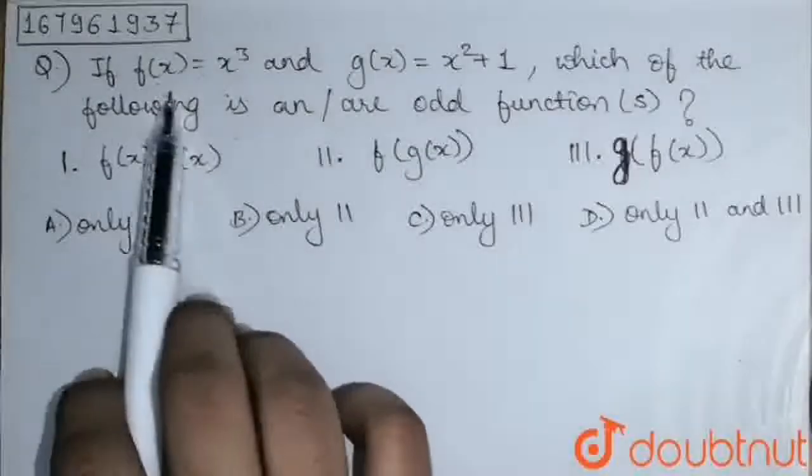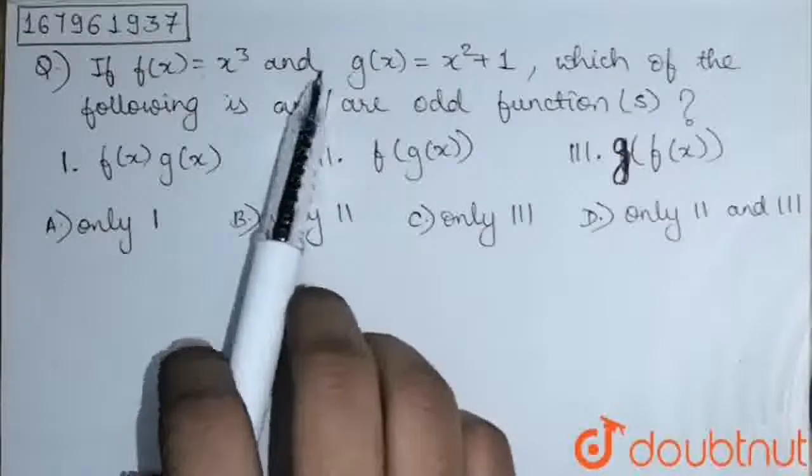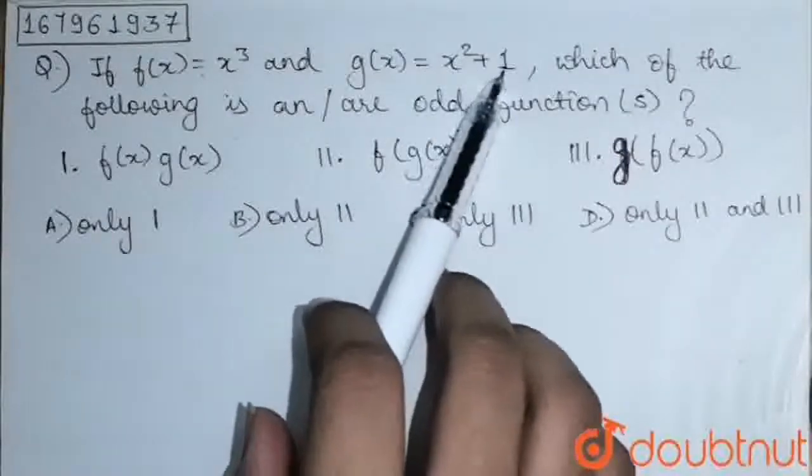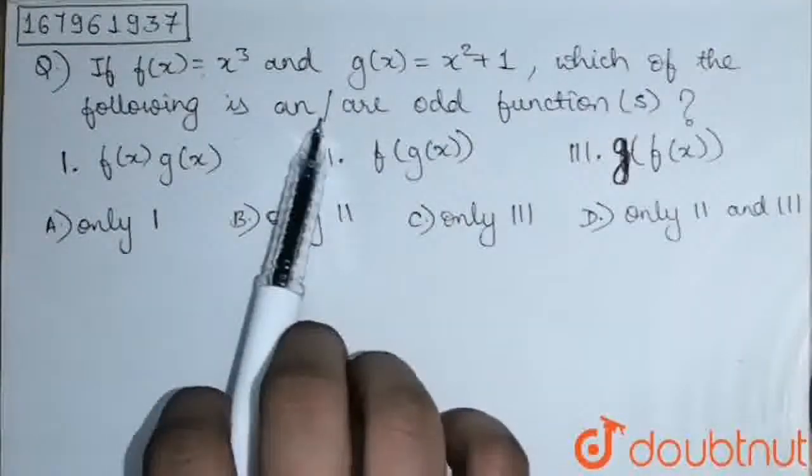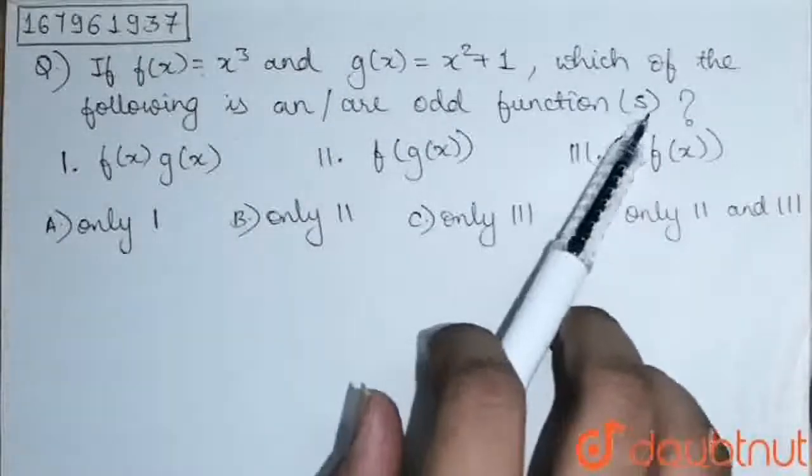The question is, if f(x) is equal to x³ and g(x) is equal to x² + 1, which of the following is an odd function or functions?